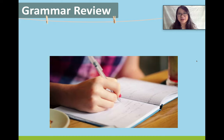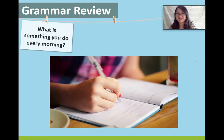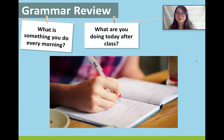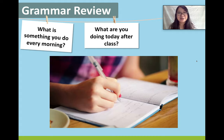To review our grammar point, I'd like you to take out a notebook and write two simple sentences to answer these questions. Number one: what is something that you do every morning? Remember, every morning is your routine, so we should use the simple present. And number two: what are you doing today after class? This is a future plan around now, so please use the present continuous. Take a moment with your notebook, and when you get back, we'll continue our lesson.